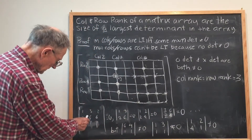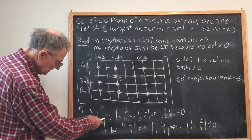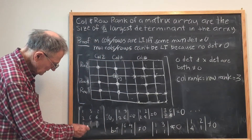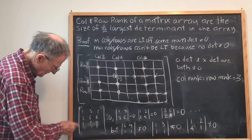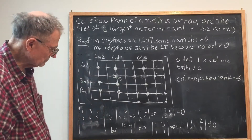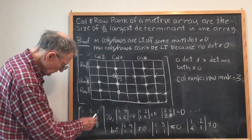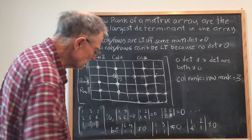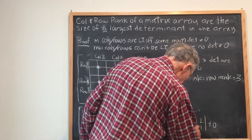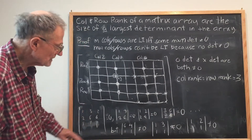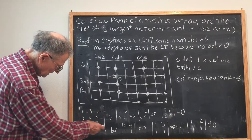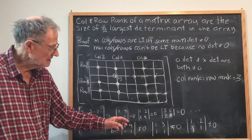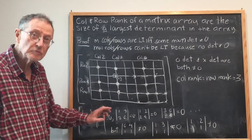For example, |6, 4 / 1, 1| says that these two columns and these two rows are linearly independent. |1, 3 / 1, 1| says that the columns and the rows through these four numbers are linearly independent. Similarly, |1, 2 / 1, 1| is unequal to zero. So the rows through these two rows and these two columns are linearly independent, and the rank is two because the largest non-zero determinant in this array is a 2 by 2 determinant.